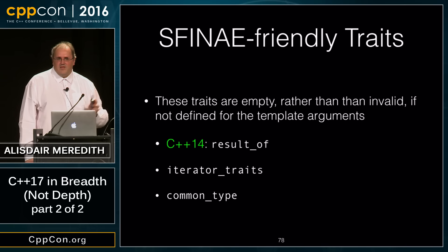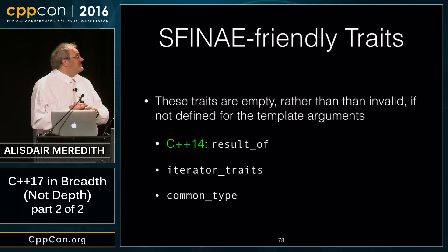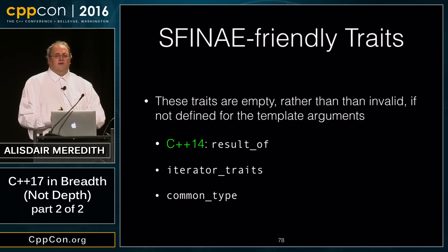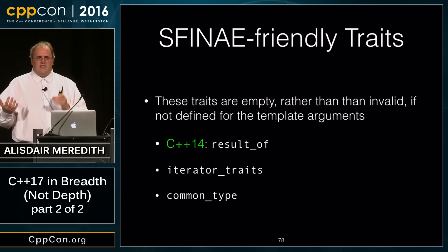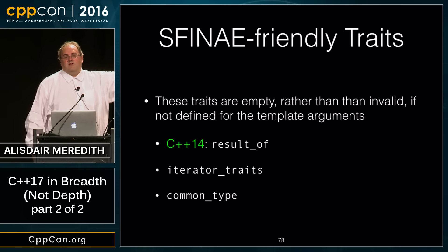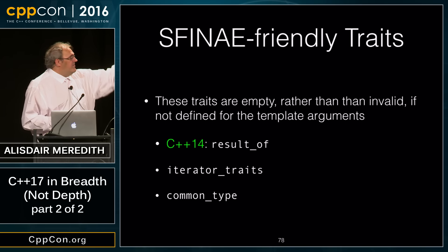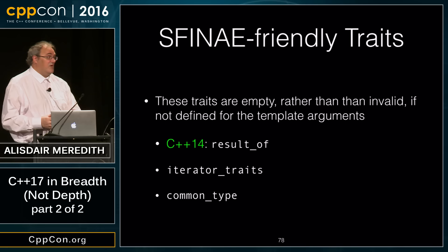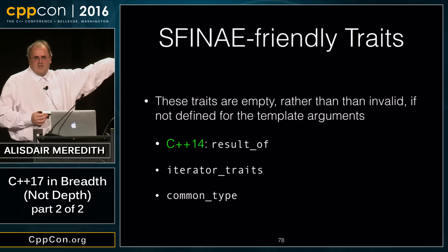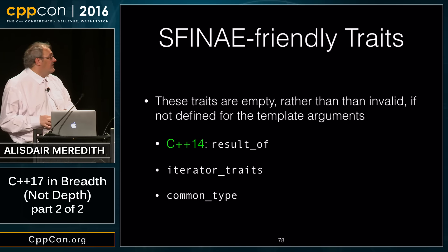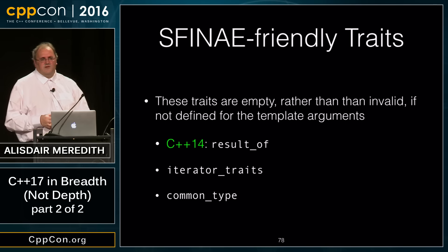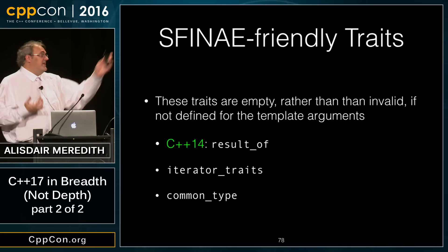There was a problem in C++14 where SFINAE on result_of would drop into a context requiring it to fail softly and pick another overload, but there was no primary definition of the result_of trait, causing hard compilation failures in the wrong places. We now require result_of to be an empty class if not appropriately defined — giving a definition to the primary template. The same has been done for iterator_traits and common_type.